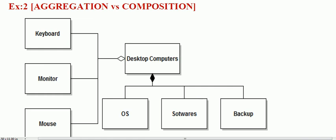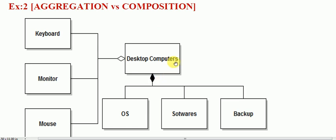Let's see one more example of aggregation vs. composition. We have taken the example of a desktop computer. With a desktop computer we get keyboard, monitor, and mouse. When we work we have operating system, software, and backup. If the desktop computer is destroyed, then OS, software, and backup will also be destroyed — this is strong lifecycle dependency, which we represent with a filled diamond for composition.